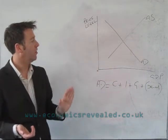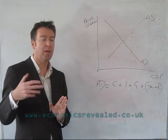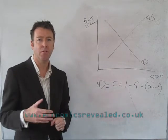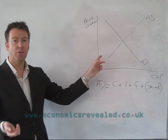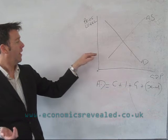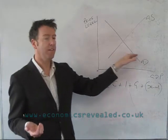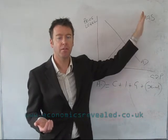There are other economists, such as those who believe in the theory of John Maynard Keynes, and they tend to draw the aggregate supply curve as being relatively flat and then sloping upwards and going up straight.